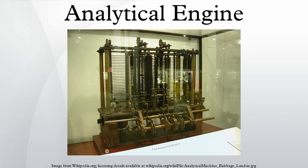During Babbage's Difference Engine project, he realized that a much more general design, the Analytical Engine, was possible. The input was to be provided to the machine via punched cards, a method being used at the time to direct mechanical looms such as the Jacquard loom. For output, the machine would have a printer, a curved plotter and a bell. The machine would also be able to punch numbers onto cards to be read in later. It employed ordinary base-10 fixed-point arithmetic.